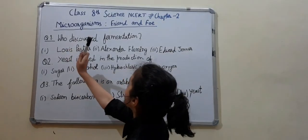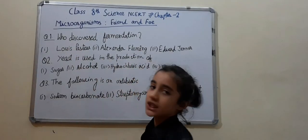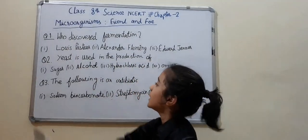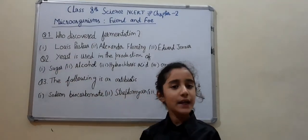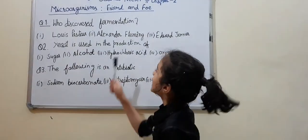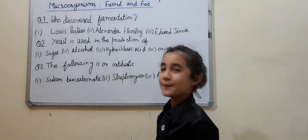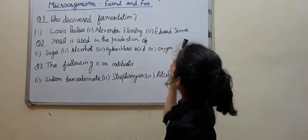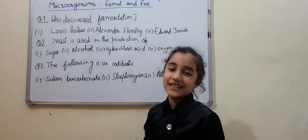Question number 1: Who discovered fermentation? Number 1, Louis Pasteur. Number 2, Alexander Fleming. Number 3, Edward Jenner.